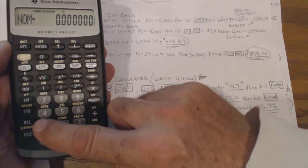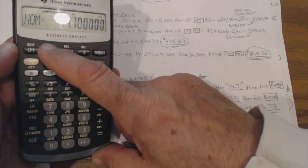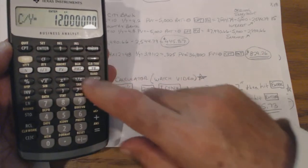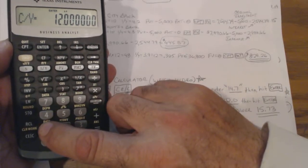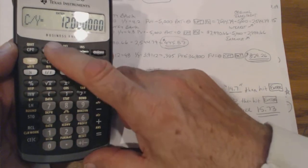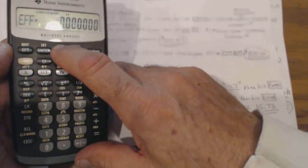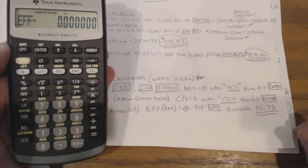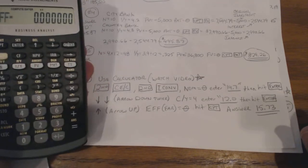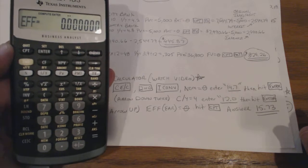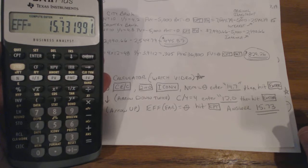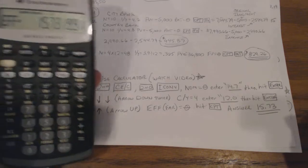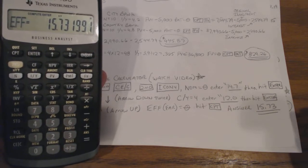So we'll put nominal in at 14.7, enter. Go down to CY, that is periods. So 12, enter. And then we hit the up arrow. And it says EFF, but that means EAR, effective annual rate. Now we're up to that. It's got zero in there. So we want to compute it. 15.73 would be your EAR, effective annual rate, or EFF in this thing.